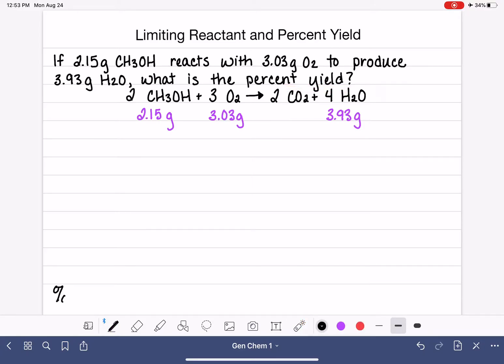So as a reminder, down here in the bottom, let's write out our percent yield calculation equation. To get the percent yield, we are going to take the actual yield, we're going to divide it by the theoretical yield, and then multiply by 100.